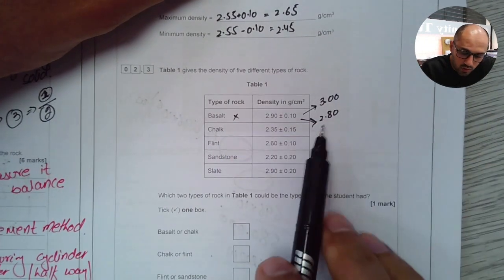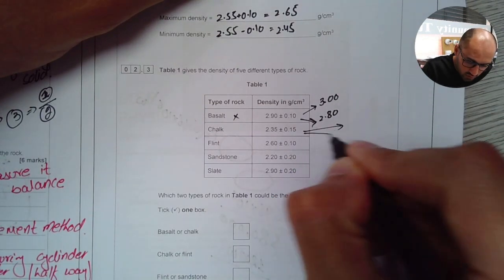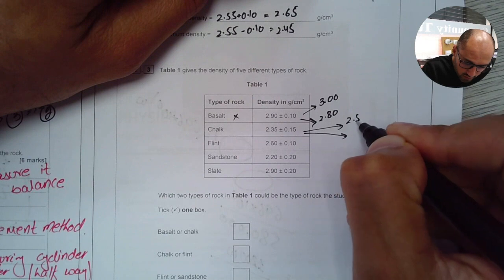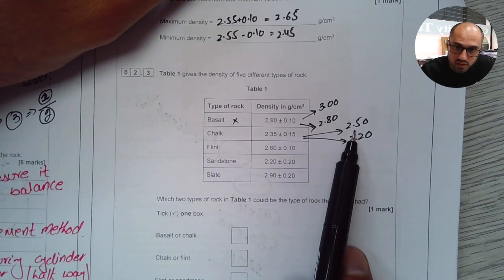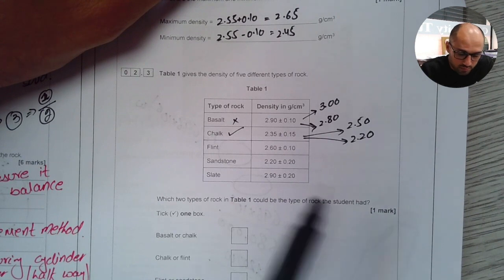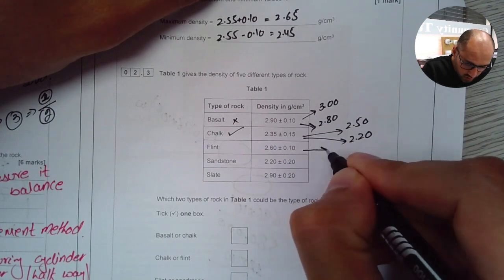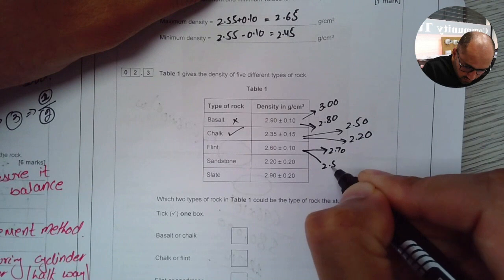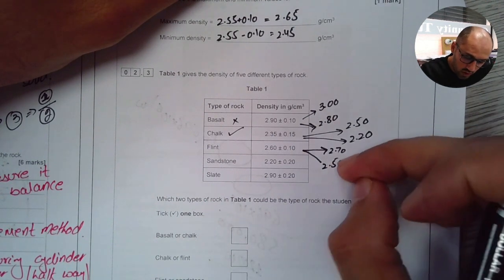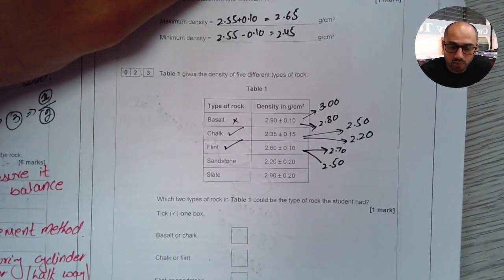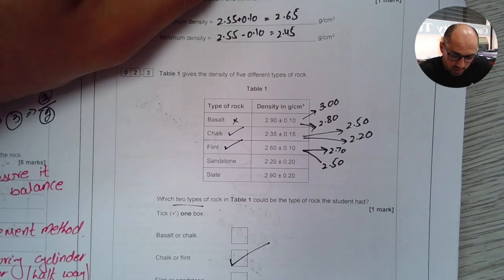They don't lie in this case. They don't lie between these two values. Therefore, it can't be this type of rock. For the second option, I can work out the two values again. It will be 2.50 and it will be 2.20. Now the value of 2.45 is below 2.50 and it is above 2.20. So it is possible that our rock might be of this type. Next one says 2.60 plus minus 0.10. So I can work out again. It will be 2.70 and 2.50. Again, I can see 2.45 and 2.65. They both are within this section between 2.5 and 2.7. So it is possible that our rock might be of this type. Now it says only two types. So I've already worked out. I'm going to say it will be chalk or flint.